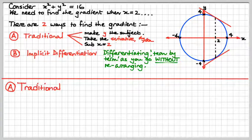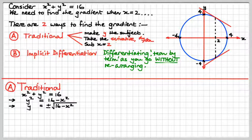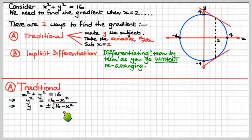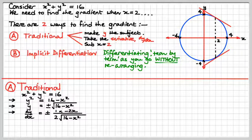Let's do the traditional method first, just to prove that we can do it. We've got x squared plus y squared equals 16. So, let's make y squared the subject, and then take the square root of both sides. Now we need to find dy/dx — y is something to the half, so it's going to be half of that something to the minus half, times the derivative of the something, which would be minus 2x. I've left the plus or minus out the front.